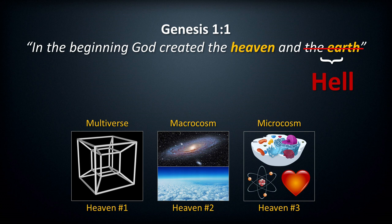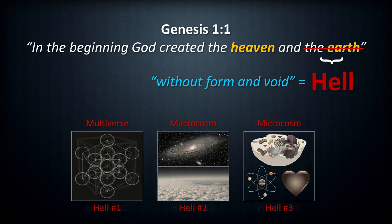The word 'earth' here is not what most would think. In order to truly understand what the first verse of Genesis is teaching, think of the word earth as the word hell — and everything will begin to fall into place. In other words, in the beginning God created heaven and hell. Once this connection is realized, the phrase 'without form and void' begins to make much more sense, as it is the literal interpretation: hell has no form and is void. Heaven and hell is what God originally created in the very first verse of the Bible. Just as there are three heavens, conversely there are three hells — a microcosm hell, a macrocosm hell, and a multiverse hell.